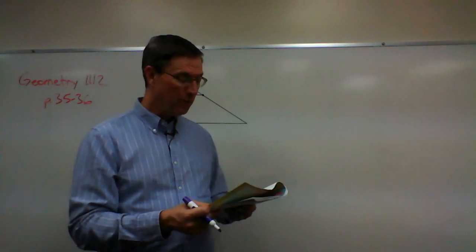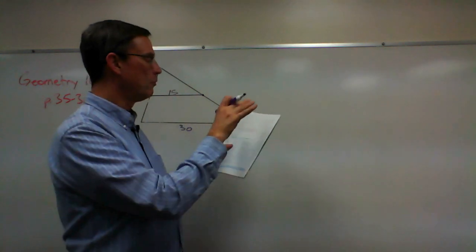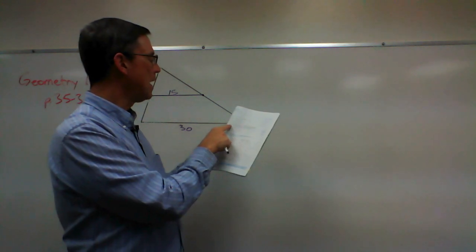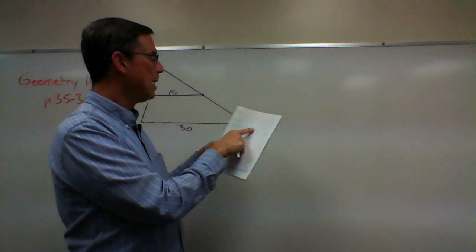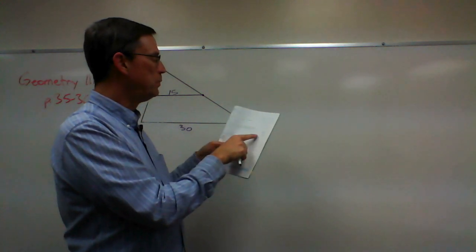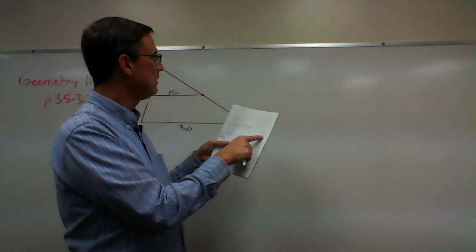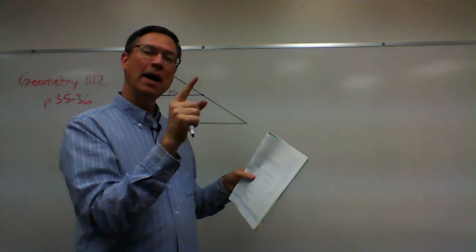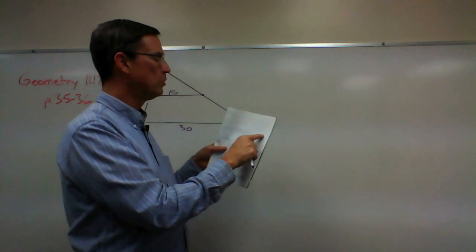Number five has kind of worked its way down. It tells you that angle A is 40 degrees. Angle B down here is 75 degrees. Now, working backwards from there.